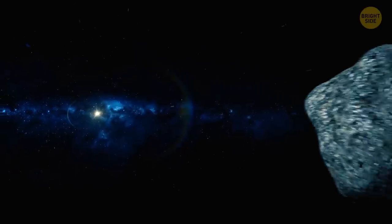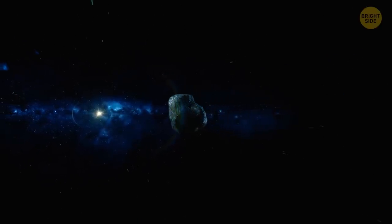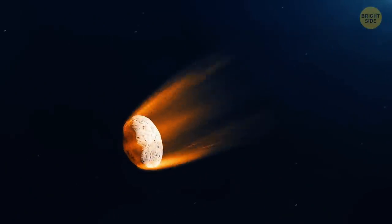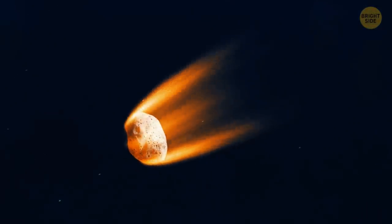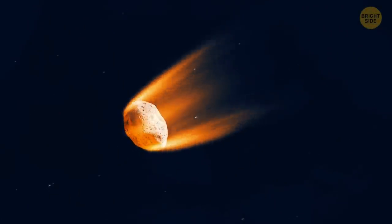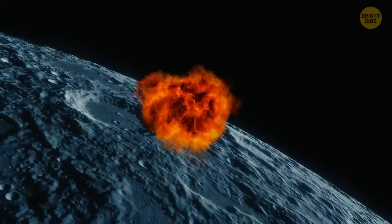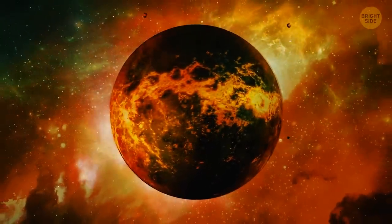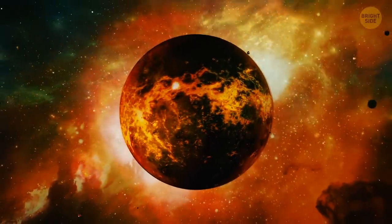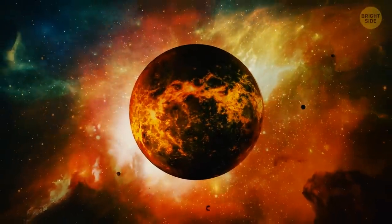During this period, huge asteroids flew through our solar system. They fell on Mercury, Venus, Earth, and Mars. It's possible that asteroids also fell on the Moon and left large craters on it. There was a real apocalypse on our planet. But fortunately, no one felt it, because there was no life yet.